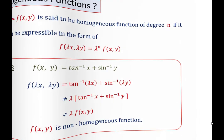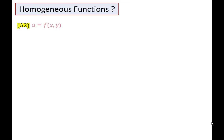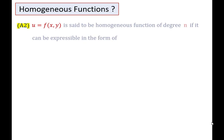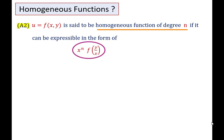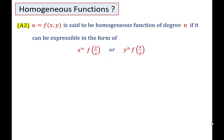Now we will discuss the second approach. The function F(X, Y) is said to be a homogeneous function of degree n if it can be expressible in the form X^n f(Y/X) or Y^n f(X/Y). To make this concept clear, we are taking the same examples discussed in the first approach, but here we will use the second approach to check the homogeneity of the functions.